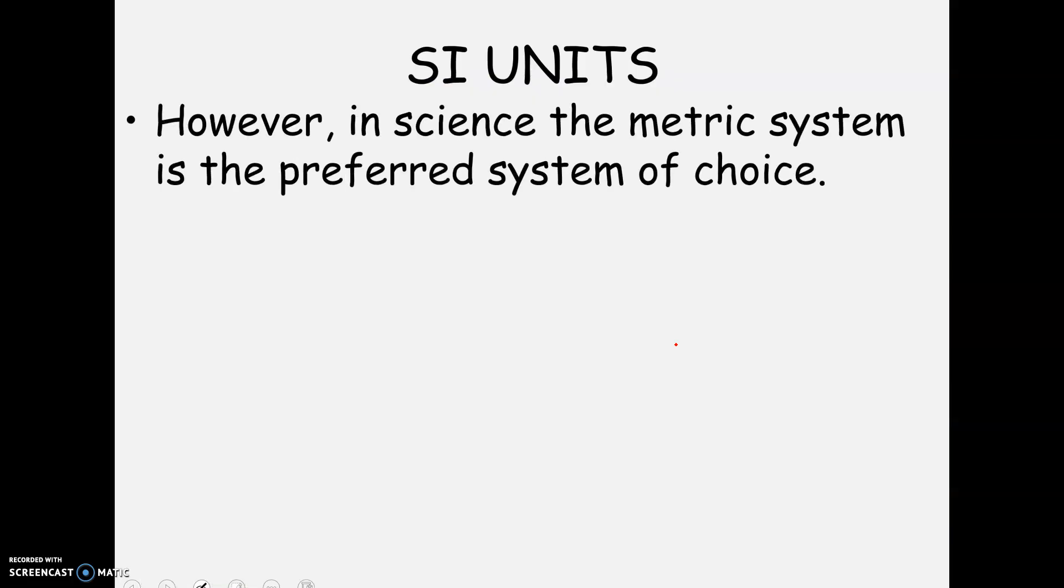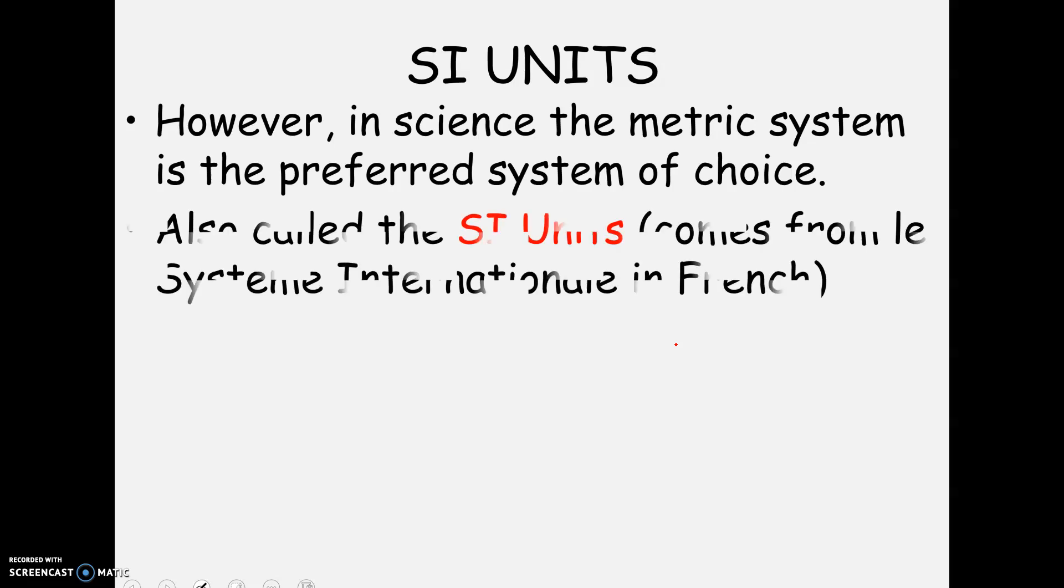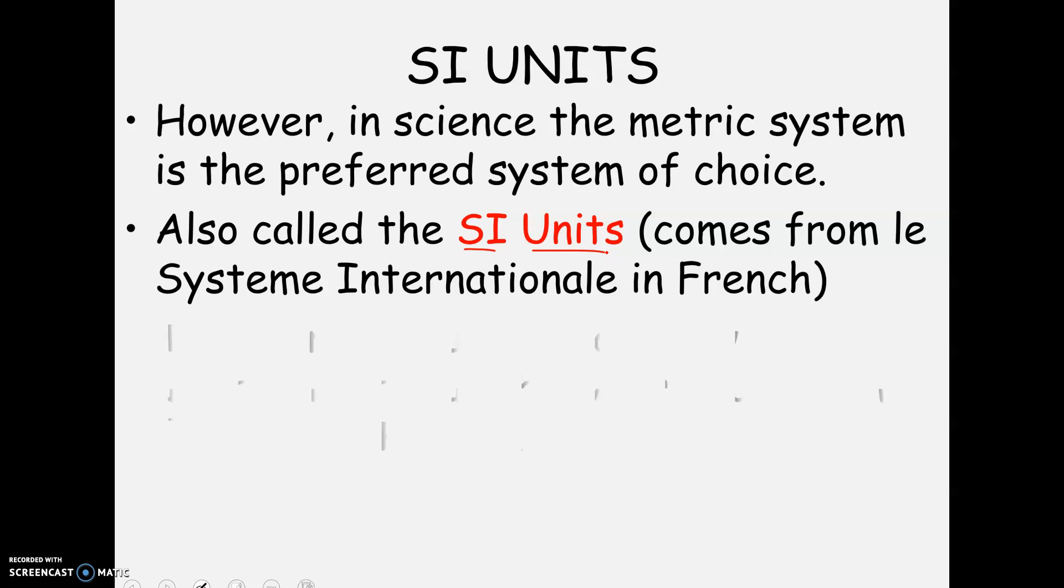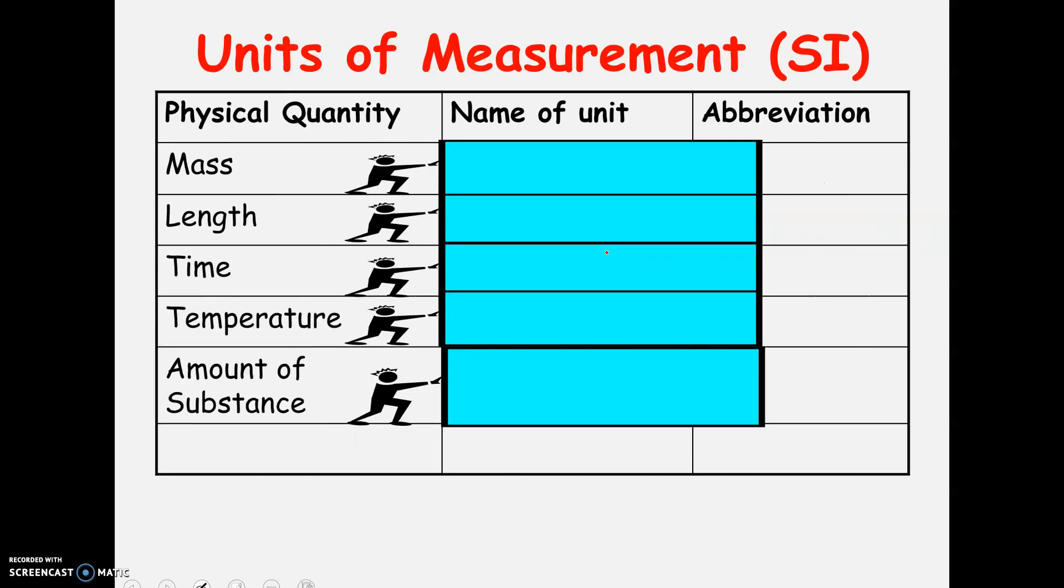So why is it that we use the metric system in science? Well, it turns out that the metric system, it's preferred, it is the units that we call the standard units. It comes from, they're called the SI units, System Internationale. And it was sort of agreed upon by the scientific community that these would be the units everyone would use. And that would make it universal.